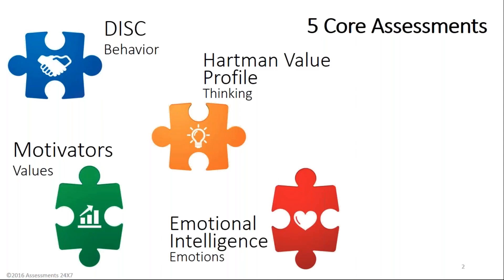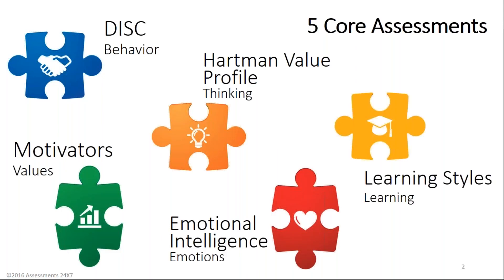The fourth core assessment is Emotional Intelligence, which looks at emotions and the ways they impact our intrapersonal and interpersonal relationships — self-management, self-recognition, social management, and social recognition. It gives us key insight into how we manage and understand our own emotions as well as how we impact relationships with others. The fifth is Learning Styles, which gives us insight into the different ways we understand and learn — and it goes beyond the traditional VAK of visual, auditory, and kinesthetic.